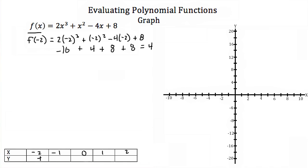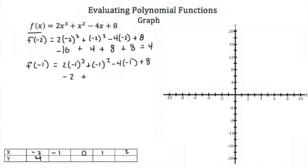So I'll put that in our table. Now let's try x = −1: f(−1) = 2(−1)³ + (−1)² − 4(−1) + 8. Negative 1 cubed is −1, times 2 is −2. Negative 1 squared is positive 1. Negative 1 times 4 is −4, but we're subtracting it, so we add 4. Then add the 8. So when x = −1, our function equals 11.